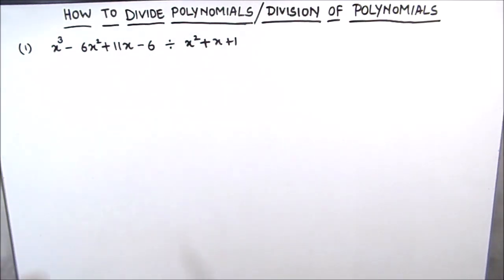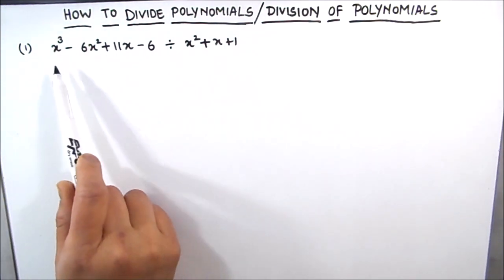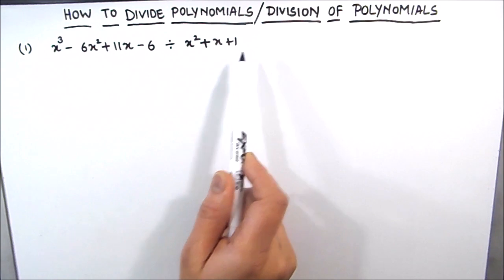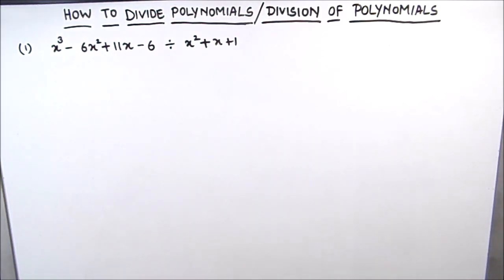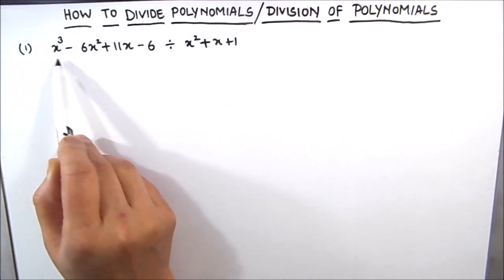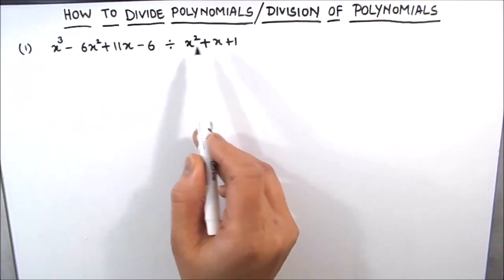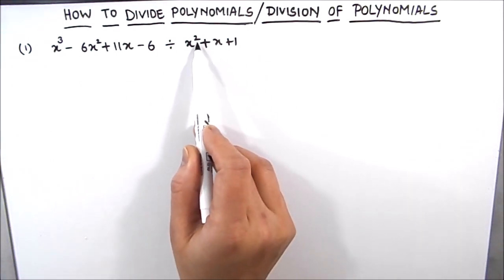The first step in dividing polynomials is to arrange the terms of the dividend and the divisor in decreasing order of their degrees. You must know that the degree of a polynomial is the highest power of the polynomial. So here for this polynomial the degree is 3, and for this polynomial the degree is 2. The highest power is called the degree.